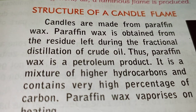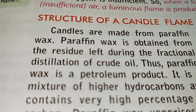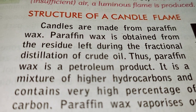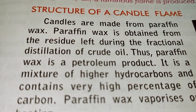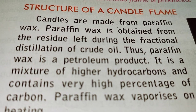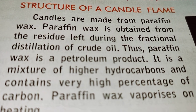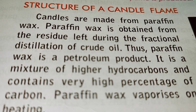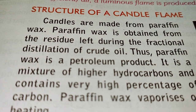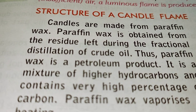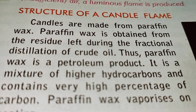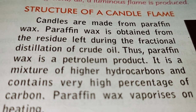Now, the structure of a candle flame. First, let us know what a candle is made of. Candles are made from paraffin wax. Paraffin wax is obtained from the residue left during the fractional distillation of crude oil or petroleum oil. When crude oil is passed through the distillation column in fractional distillation, many materials are separated out, like diesel, kerosene, petroleum jelly, and paraffin wax. Therefore, paraffin wax is a petroleum product.